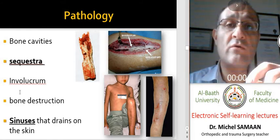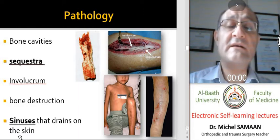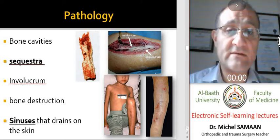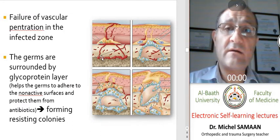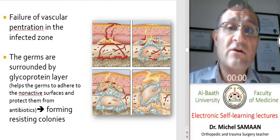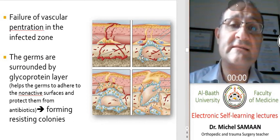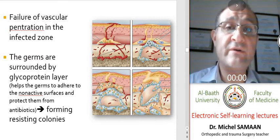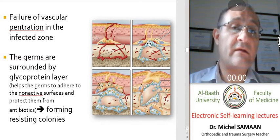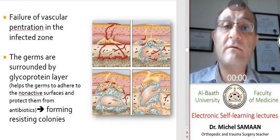The involucrum is the thickening or new bone formation resulting from periosteal reaction and bone destruction. Sinuses drain pus to the skin surface, as seen here. The presence of sequestra creates devascularized areas of bone that allow germs to adhere and cause abscesses that are not treatable by antibiotic therapy alone, even intravenously.